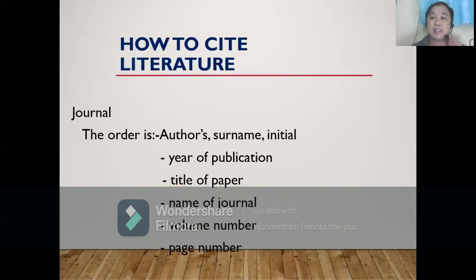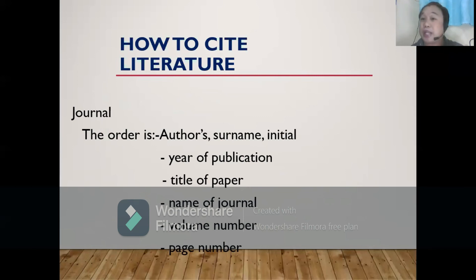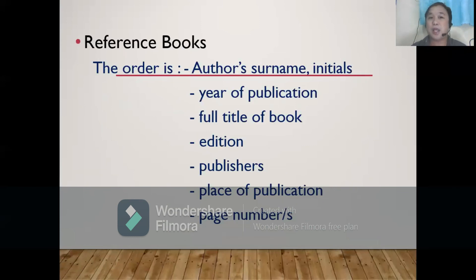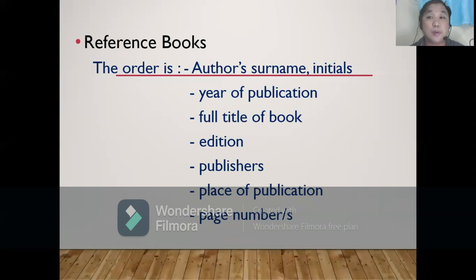So how do you cite a literature? When the literature is coming from a journal, the order is: author's surname, initial, year of publication, title of the paper, name of the journal, volume number, and page number. If it is coming from a reference book, the order is: author's surname, initial, year of publication, full title of book, edition, publisher, place of publication, and page number.